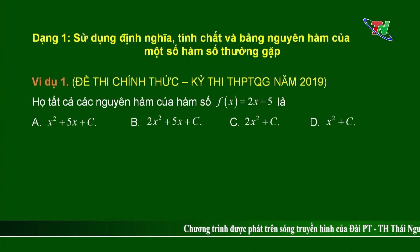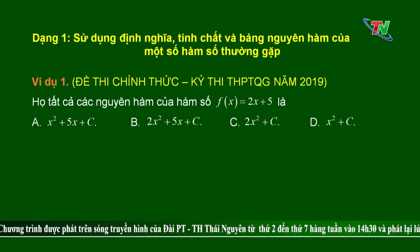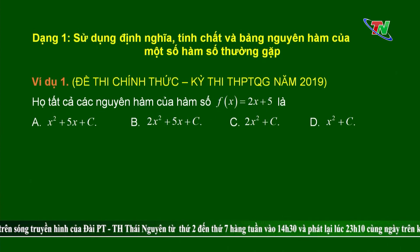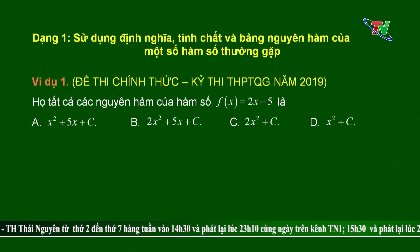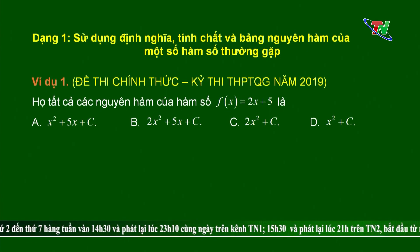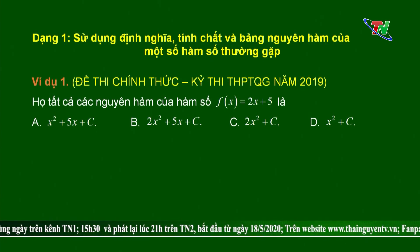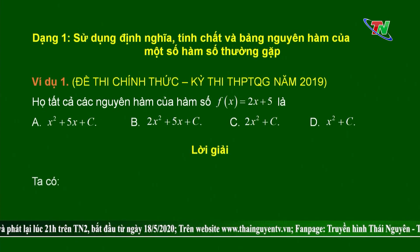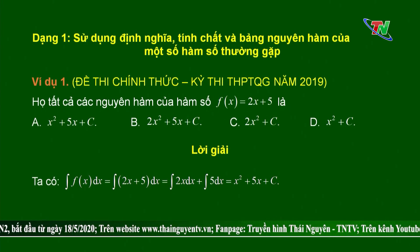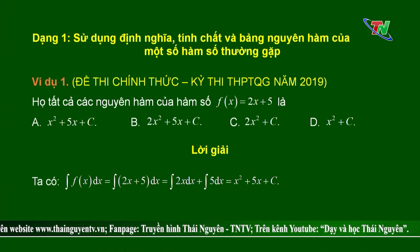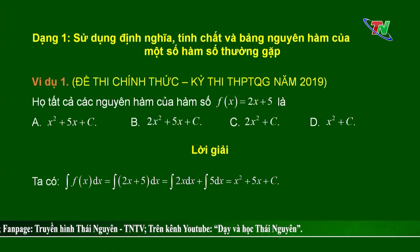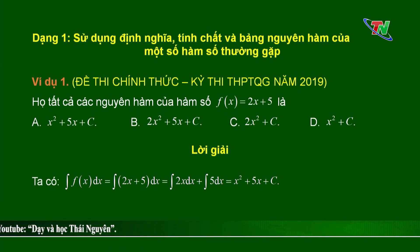Ví dụ số 1 — một câu trong đề thi chính thức kỳ thi Trung học Thống Quốc gia năm 2019. Họ tất cả các nguyên hàm của hàm số f(x) = 2x + 5 là phương án nào? Đây là câu cơ bản, các em sử dụng bảng nguyên hàm. Ta có ∫(2x+5)dx = ∫2x·dx + ∫5·dx = x² + 5x + C. Khi đó ta chọn đáp án đúng là phương án A: x² + 5x + C.